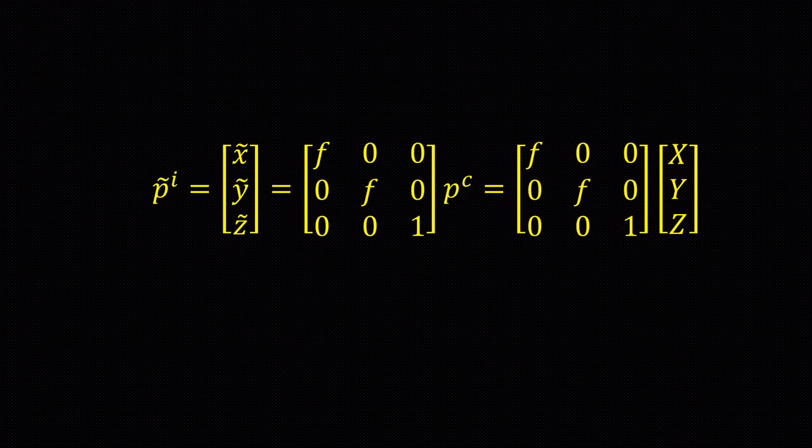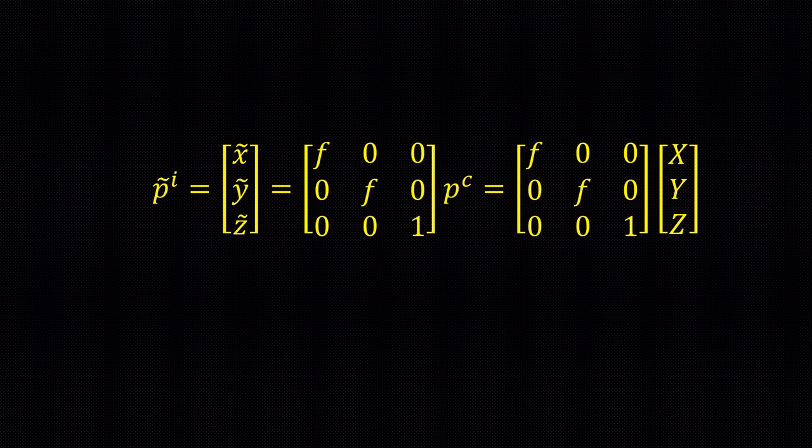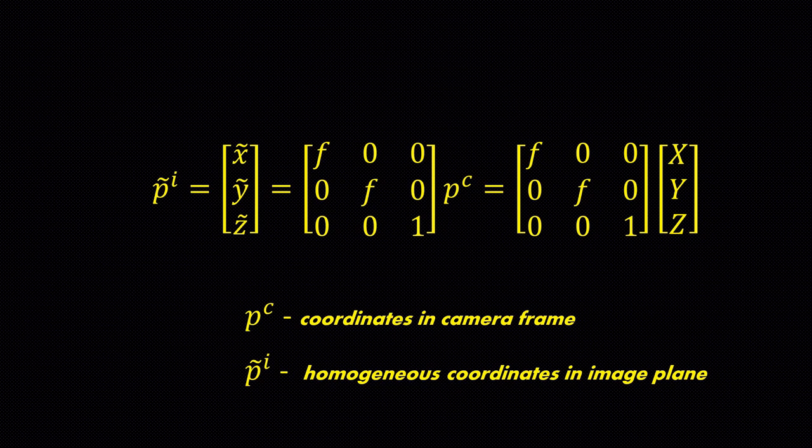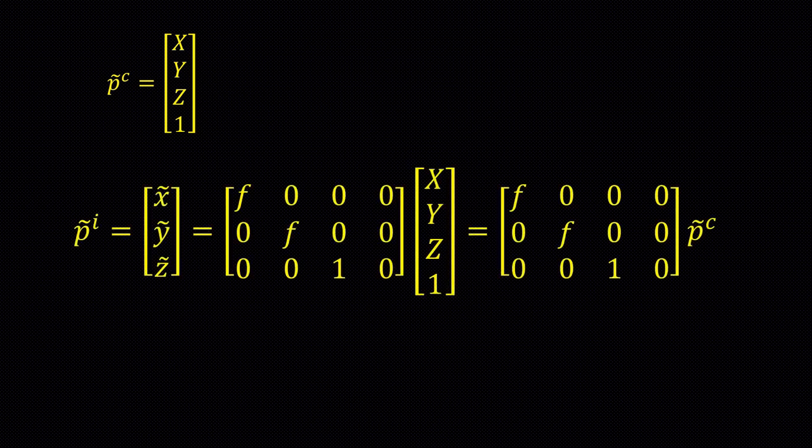We will write this in the matrix form where p tilde i represent homogeneous coordinates in the image plane and pc which has the coordinates x, y, z represent the coordinates in camera frame. We can also represent the camera coordinates in the homogeneous form as shown. Now, we can rewrite the equation.